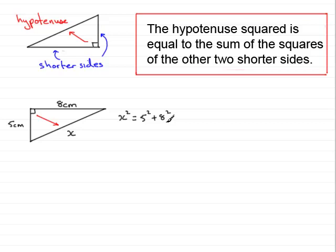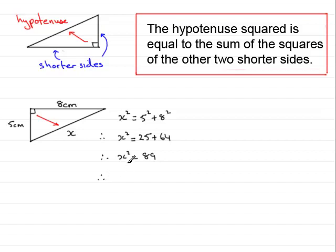All I need to do now to work out x is to solve this equation. So x squared equals 5 squared, which is 5 times 5, which is 25, plus 8 squared, that's 8 eights, which is 64. Adding those two numbers together, 25 and 64, gives 89. To get x, I need to take the square root of both sides. The square root of x squared is x, and so x equals the square root of 89. Using a calculator, you should find that gives 9.433 and so on.